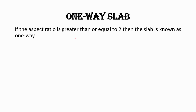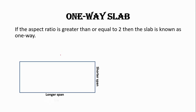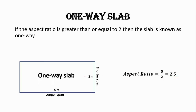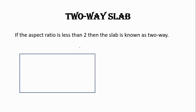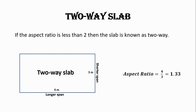If the aspect ratio is greater than or equal to two, the slab is known as a one-way slab. For example, if the longer span is five meters and the shorter span is two meters, the aspect ratio is 2.5, which is greater than two — so it is a one-way slab. If the aspect ratio is less than two, the slab is a two-way slab. For example, a longer span of four meters and shorter span of three meters gives an aspect ratio of 1.33, which is less than two, so it is a two-way slab.